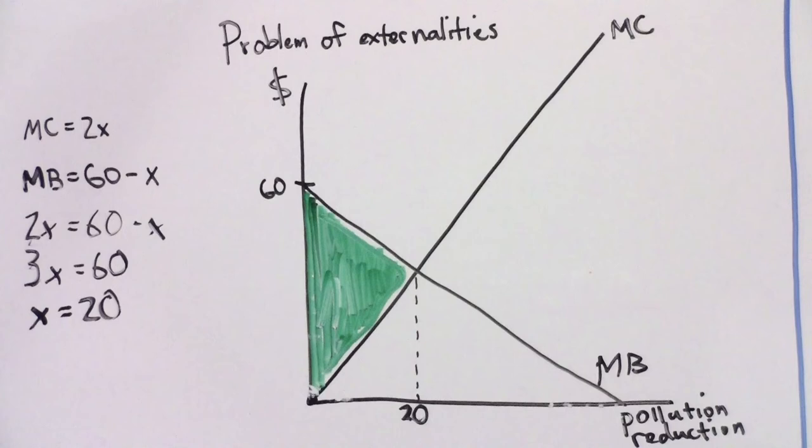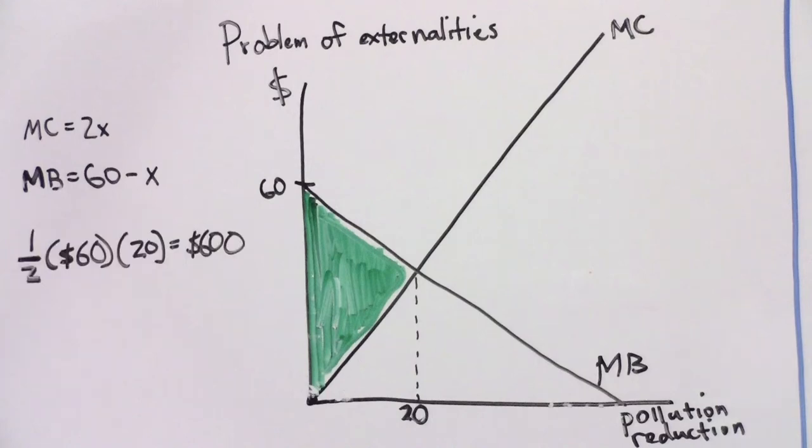How much would social welfare increase if your neighbor reduces pollution by 20 pounds per year? We can simply calculate the difference between the benefit and the cost of reducing pollution. This is equal to the area of the green triangle, or one half times $60 times 20. Reducing pollution to its efficient level would increase social welfare by $600.